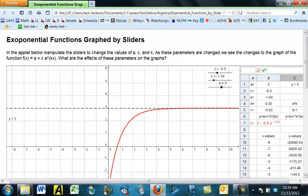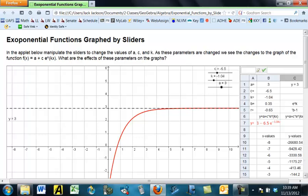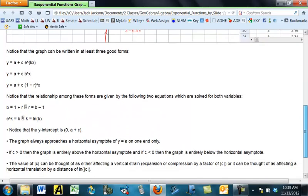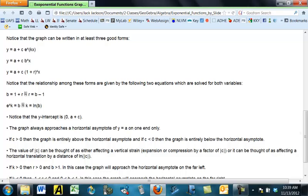And you can follow what's happening with the Y values in the table as well. And you can look at that over here if you want as well. So some of this is summarized here. There are at least three good forms that we can use. Y equals A plus C times E to the power of KX. Y equals A plus C times B to the X. Or Y equals A plus C times 1 plus R to the X. And the basic relationship is B equals 1 plus R, which is the same thing as R equals B minus 1. And E to the K equals B, which is the same as K equals natural log of B. The Y intercept is 0 comma A plus C. The graph always approaches a horizontal asymptote of Y equals A, but only on one end, one end or the other. If C is positive, the graph is entirely above the horizontal asymptote. And if C is negative, the graph is entirely below the horizontal asymptote.